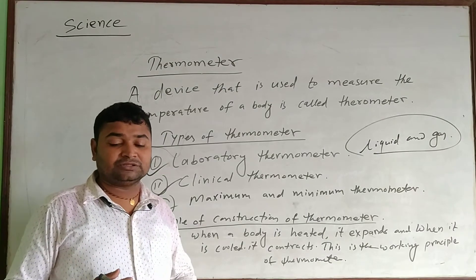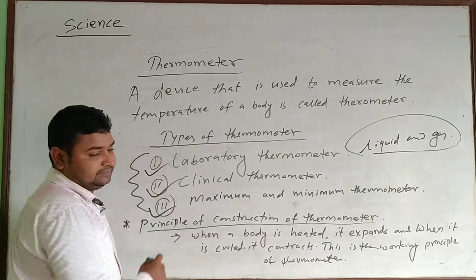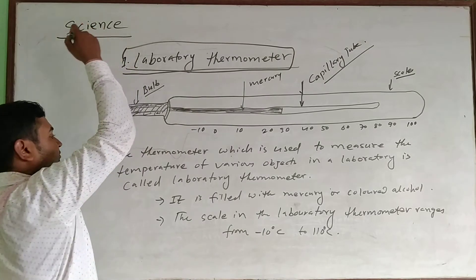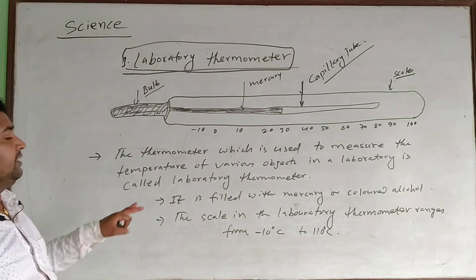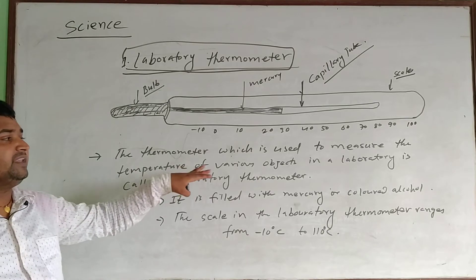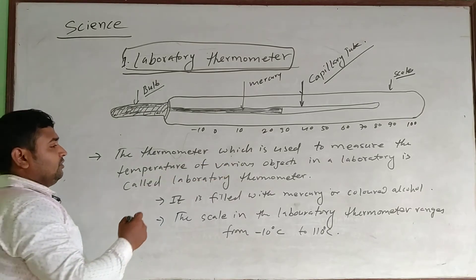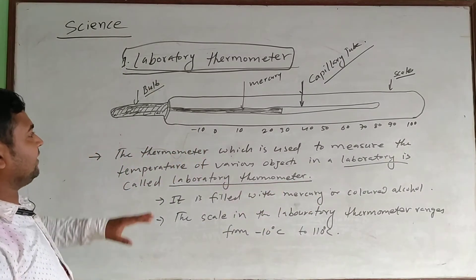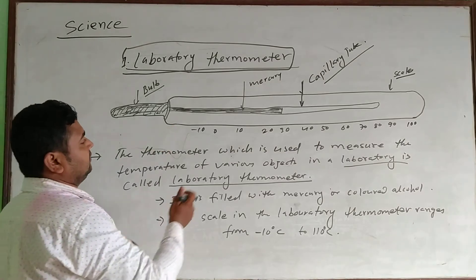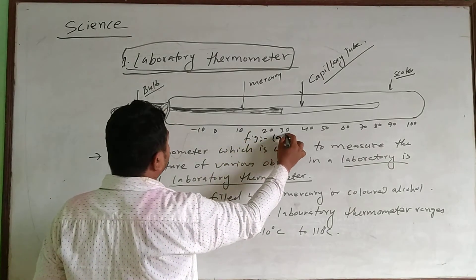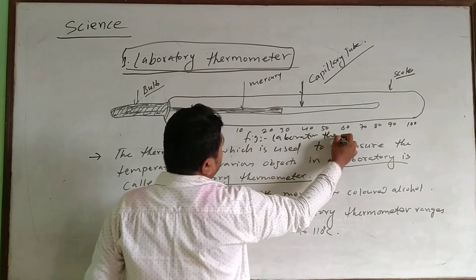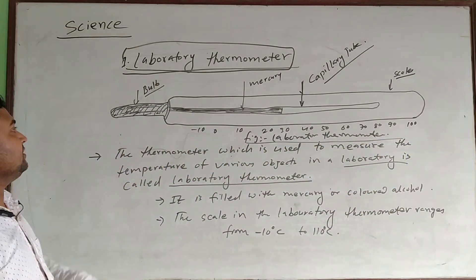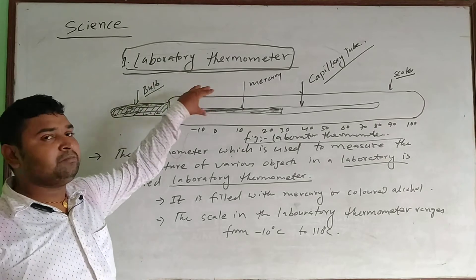Now let's talk about the first type: the laboratory thermometer. The laboratory thermometer is used to measure the temperature of various subjects in the laboratory. You can see the diagram clearly — this is the figure of the laboratory thermometer.